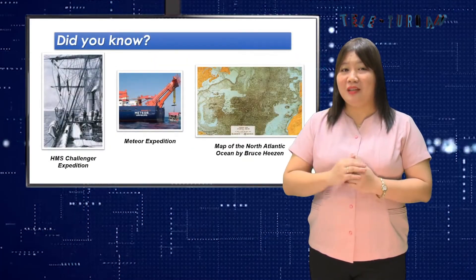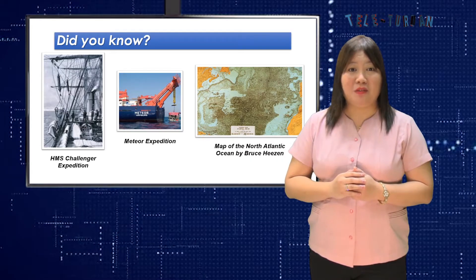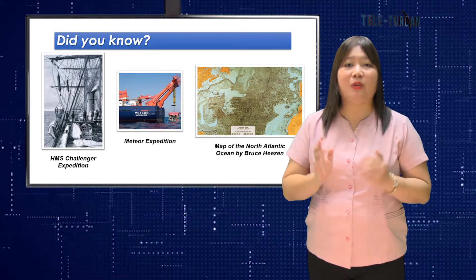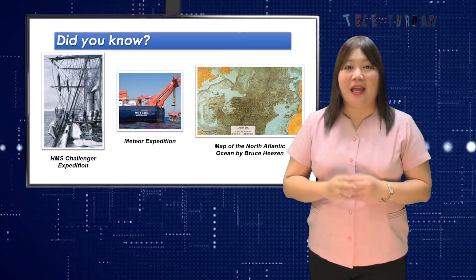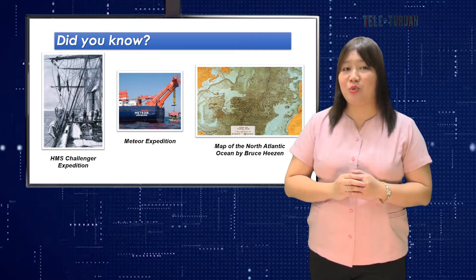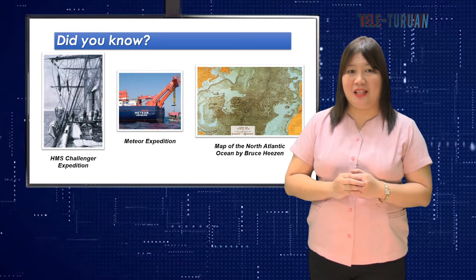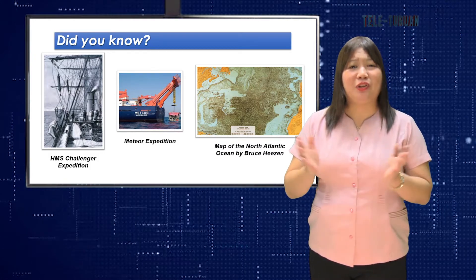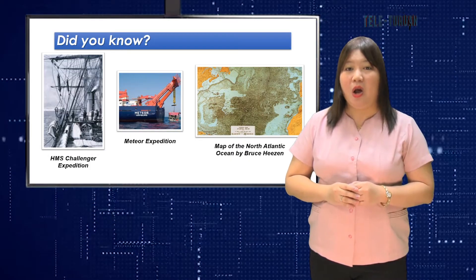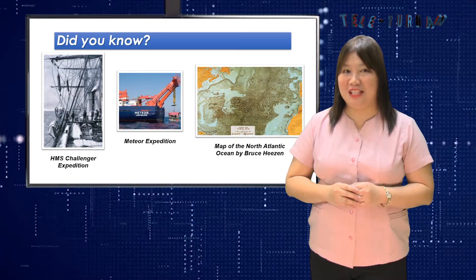Did you know, the HMS Challenger expedition made the first attempt to measure water depth with winches and cables, and the Meteor Expedition was the first to measure water depth with acoustic methods using echo sounding. The first public map of the North Atlantic Ocean Basin was published by Bruce Heezen in 1959.